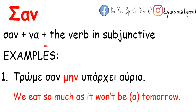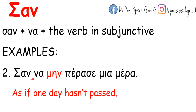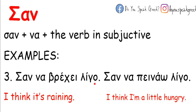We also use σαν before a verb plus να, meaning with the subjunctive. For example, τρώμε σαν να μην υπάρχει αύριο — a common expression meaning we eat a lot without thinking about it. Another example: Σαν να βρέχει λίγο means 'I think it's raining', and σαν να πινάω λίγο means 'I think I'm a little hungry'.